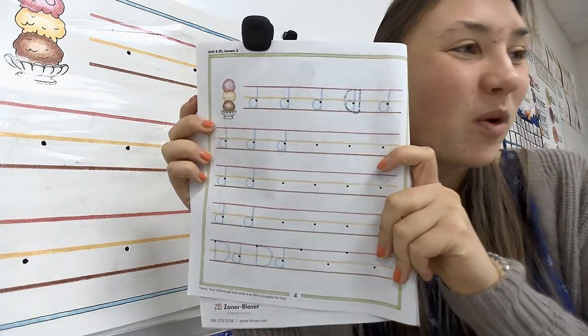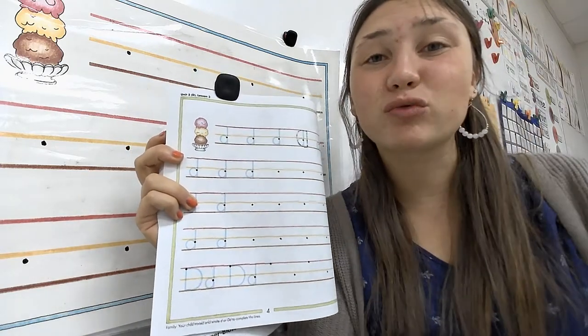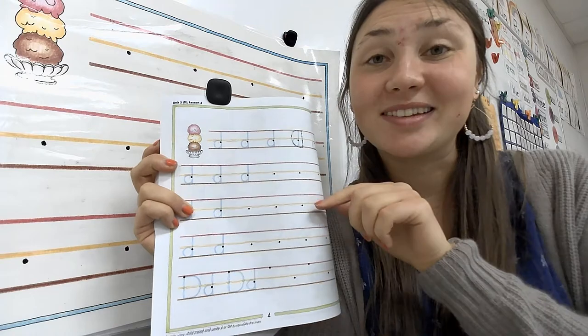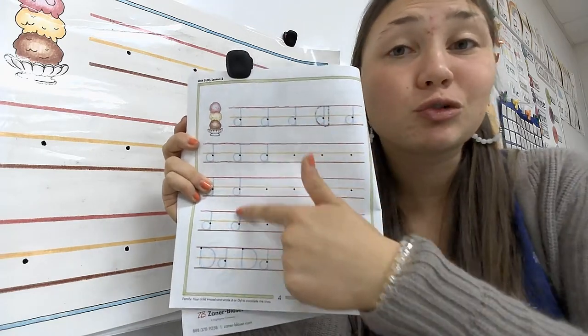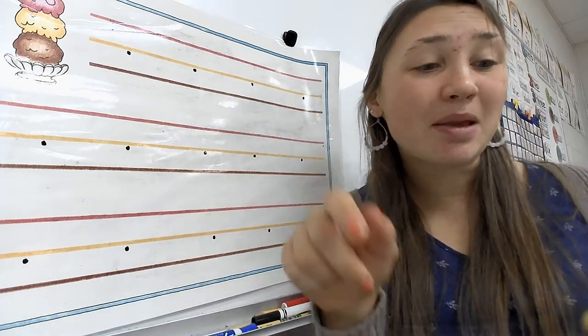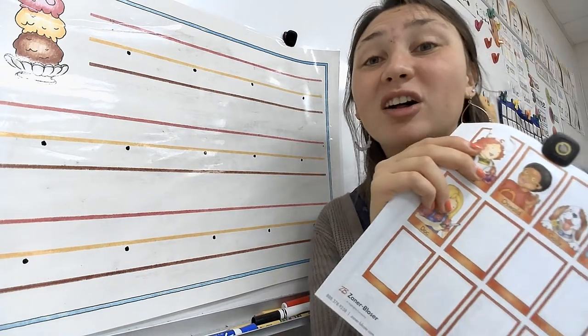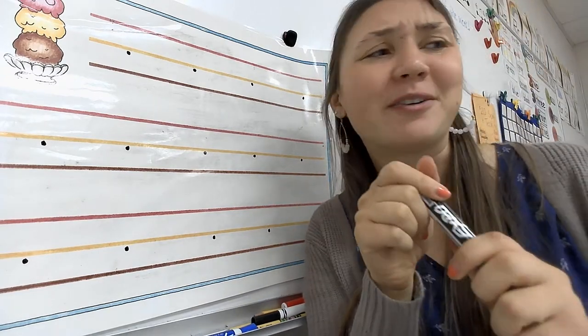Yesterday you traced those and wrote those uppercase d's. Today we're going to do lowercase. So before you start tracing and doing these, what I want to do is show you on the big ice cream paper how to write a lowercase d, how you're supposed to do it. So just watch carefully for now.